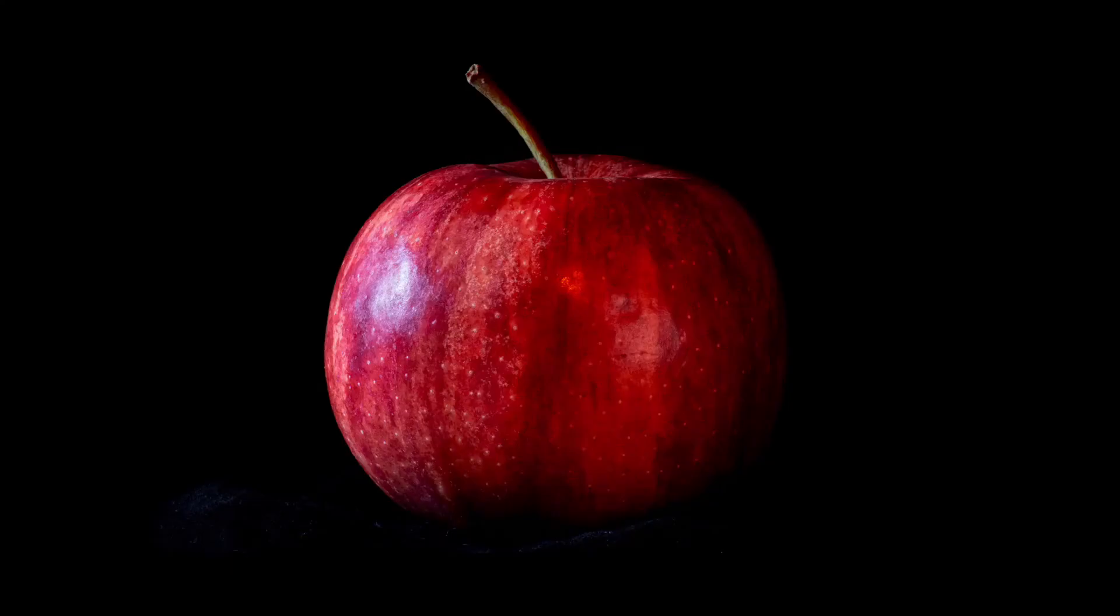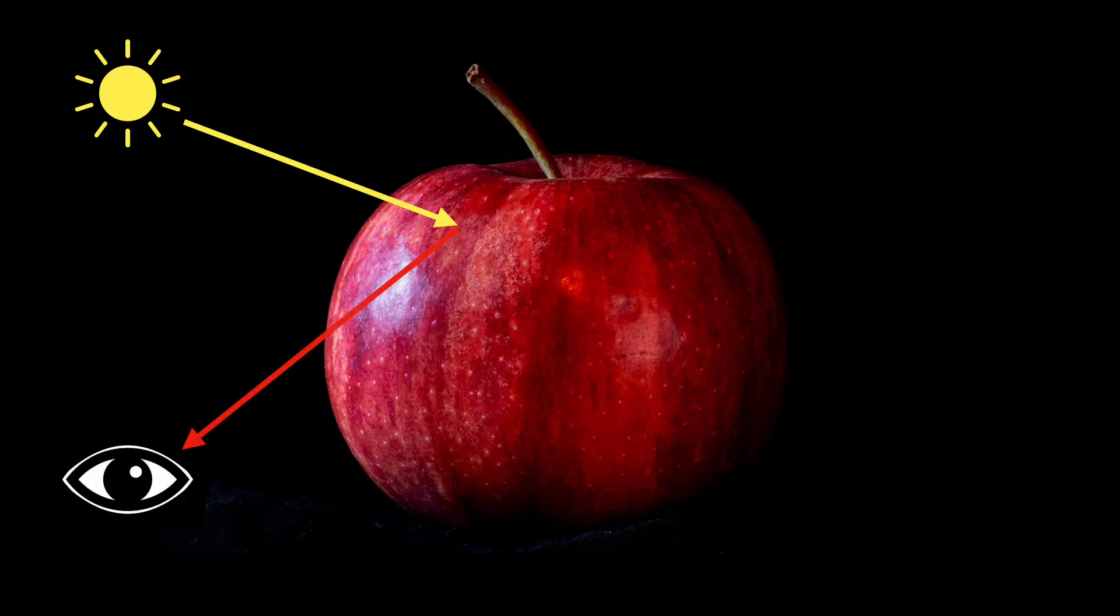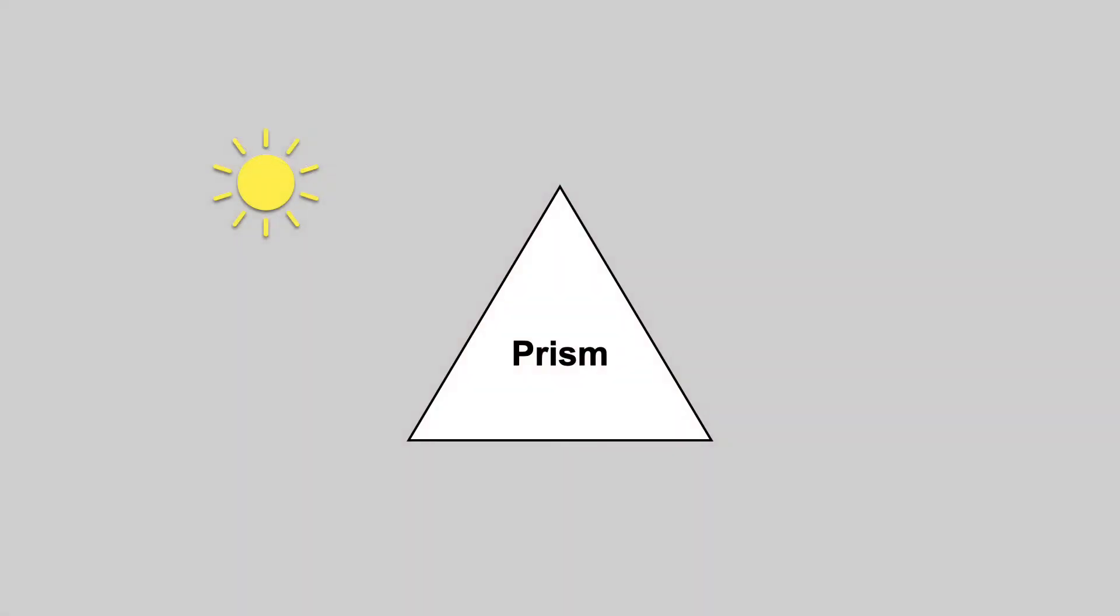So how about an apple? What makes it red? Does the light turn red when it bounces off? Well, not exactly. In fact, white light contains red light and the rest of the colors. We can see this by using a prism, which separates white light into its components.